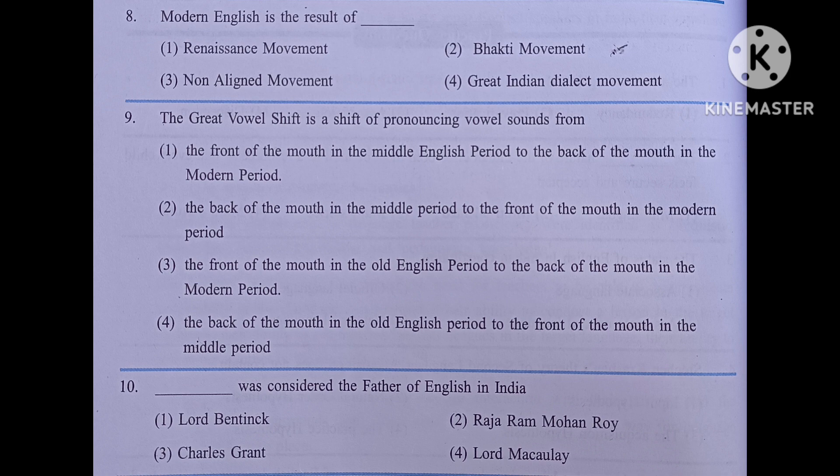Who was considered the father of English in India? Number one, Lord Bentinck; number two, Raja Ramohan Rai; number three, Charles Grant; number four, Lord Macaulay. The answer is Lord Macaulay.